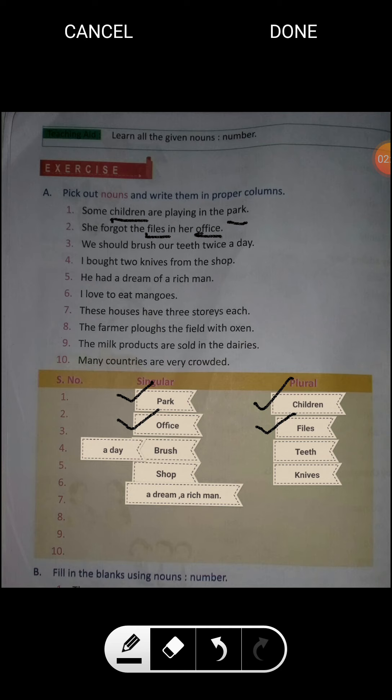Sentence third: 'We should brush our teeth twice a day.' In this sentence, brush is singular number and again a day is singular. So both these nouns would be written under the column of singular as I have done it.